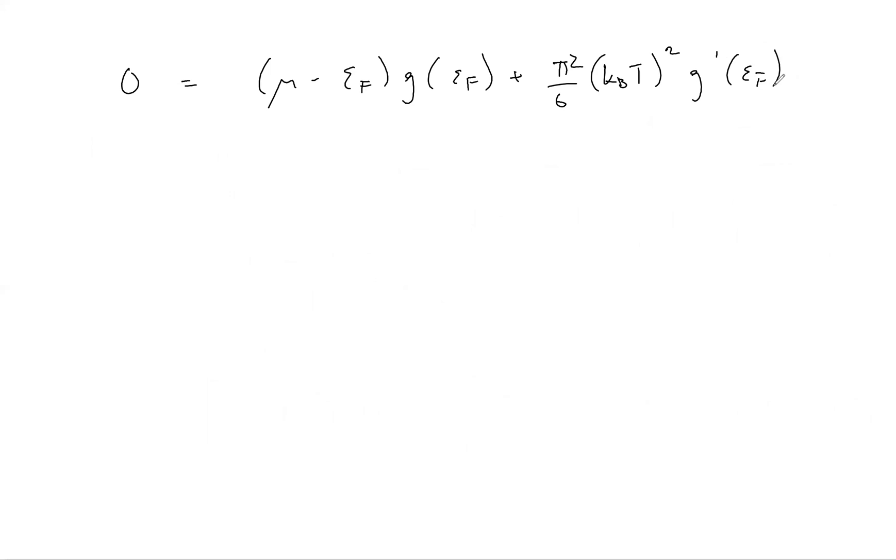We can rearrange this equation to find an expression for mu. So this now is an expression for mu, and we see that it differs from the Fermi energy by terms of order T squared. This is in accordance with our expectation and how we constructed the derivation in the first place.